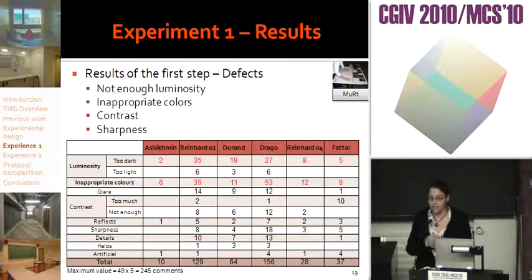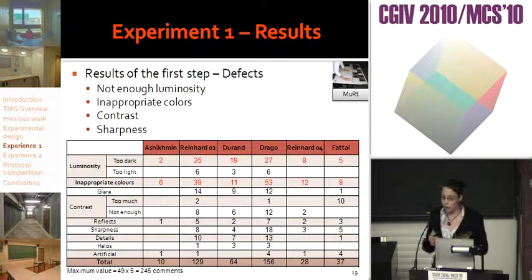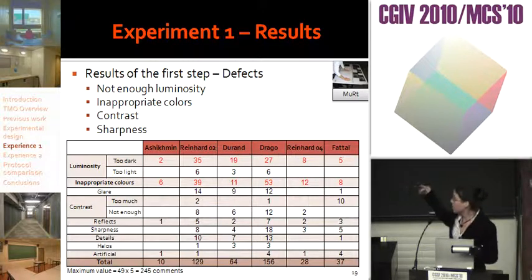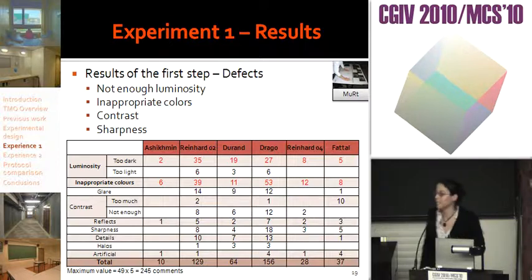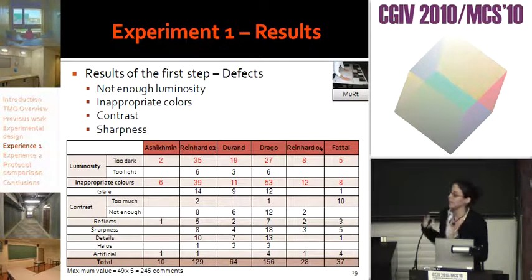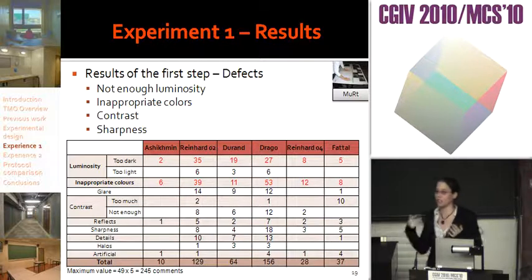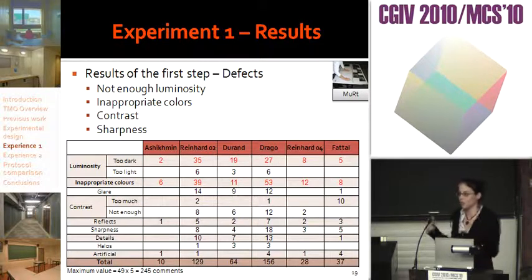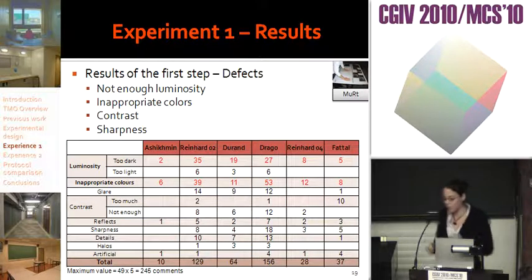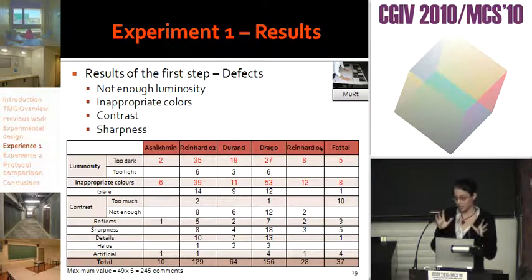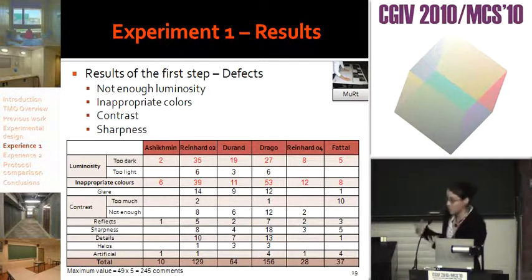About the defect comments: various categories of defects were identified, and the number of comments for each category are given in this table. The darkness of the image and inappropriate colors are the most cited defects. Colors were judged inappropriate when participants found them too strong or not strong enough, too bright, too warm, or on the contrary too drab. Comments on color were related to different image features — participants related global defects for the entire scene and local defects for part of a scene, linking color defects to light colors and/or object colors.